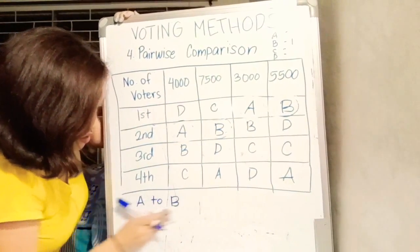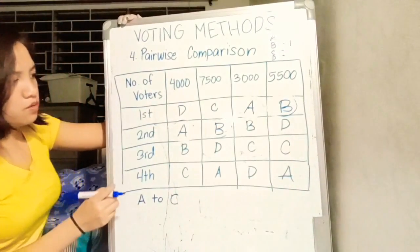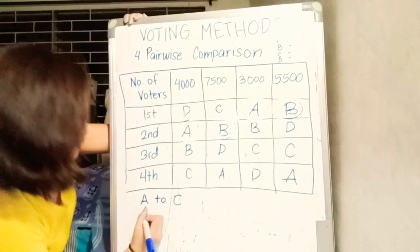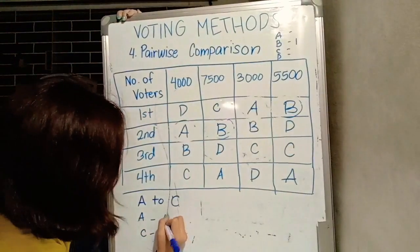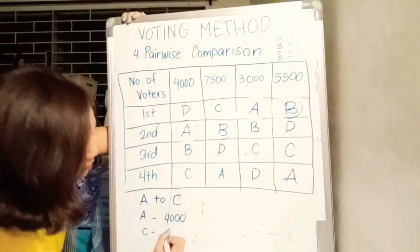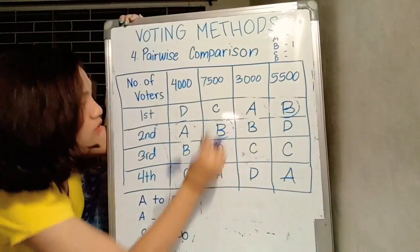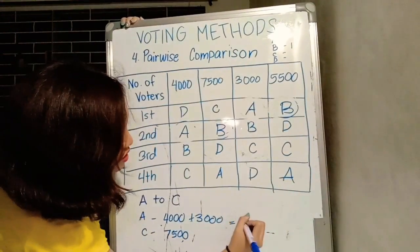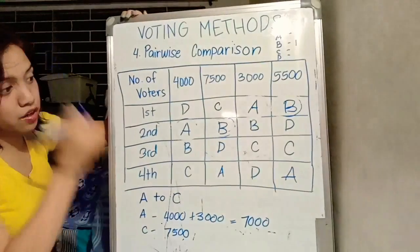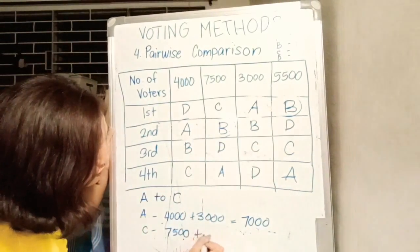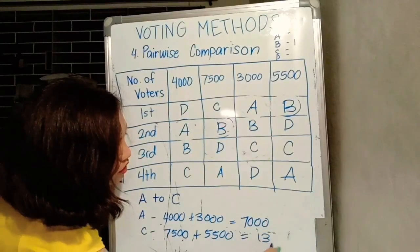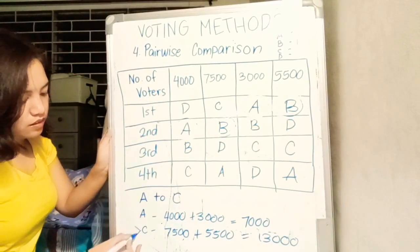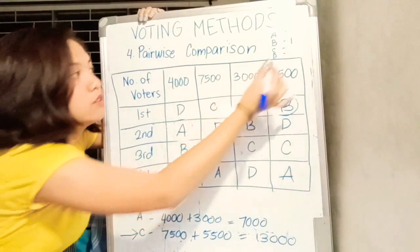Next, we compare A and C. Check mo ulit yung lahat ng A and C as their first choice. For 4,000, they prefer A. 7,500 prefer C. And 3,000 prefer A. 4,000 plus 3,000 equals 7,000. They prefer C for 5,500. Mayroong 13,000 voters who prefer letter C over letter A. Because of that, letter C wins the pairwise comparison. We give letter C one point.